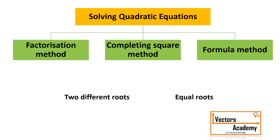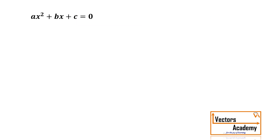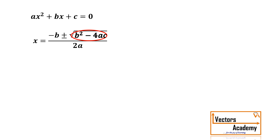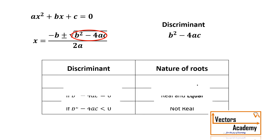To understand this, let us see what the formula to solve the quadratic equation was. The formula was x = (−b ± √(b²−4ac)) / 2a. The term inside the radical sign, that is b²−4ac, is called the discriminant, and the value of the discriminant actually decides the nature of the roots.